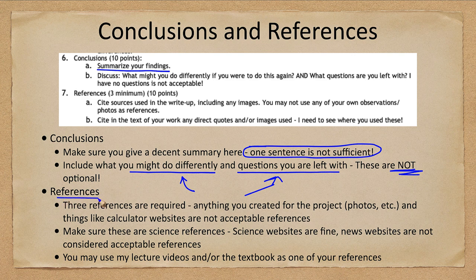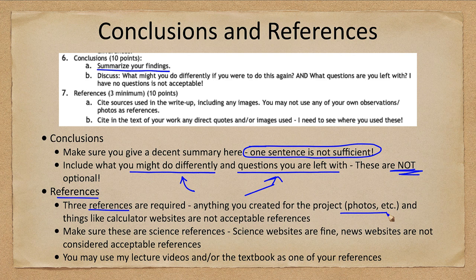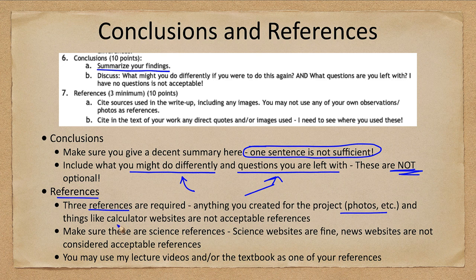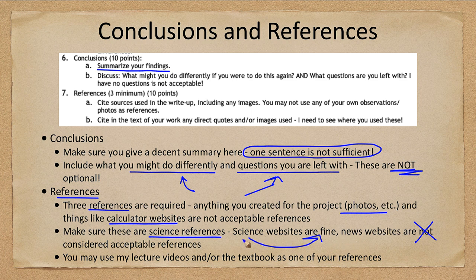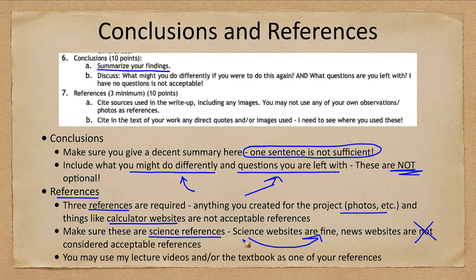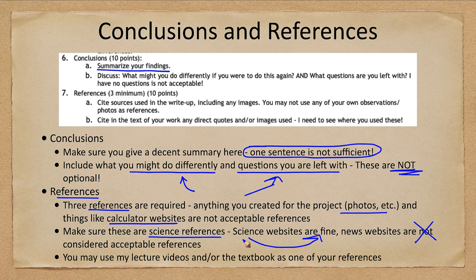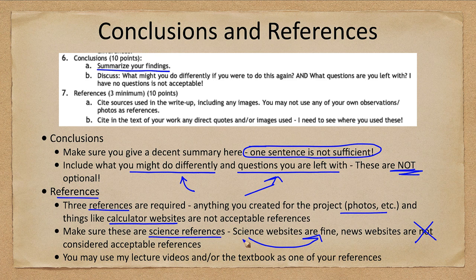For references, three references are required. Anything that you created, like a photo you took, is not a reference—that's something you created. You don't need to cite a calculator website or anything you used to do calculations. Those are not acceptable references. Make sure they are science references—a science website is fine, but news websites are not. You will not get credit for a news website. It doesn't have to be a peer-reviewed scientific paper, but at least make sure you're going to a scientific site. NASA, of course, has some great sites you can use.